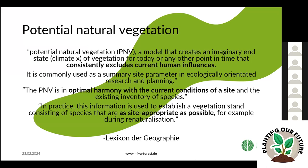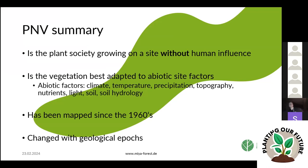The PNV — Potential Natural Vegetation — tries to describe the plant community that is best suited to the site conditions: the weather, climate, topography, and everything — what would grow there if humans had never interfered. Since in Europe human influence is present in almost any case, the potential natural vegetation is sometimes difficult to figure out and map.